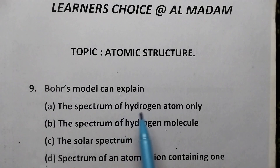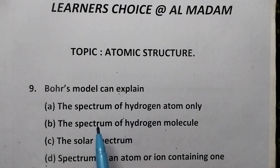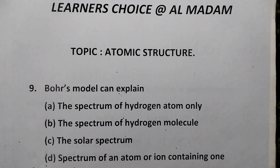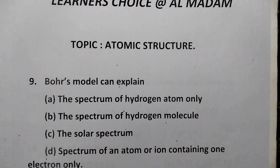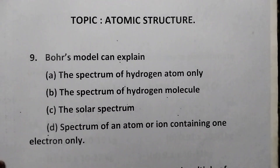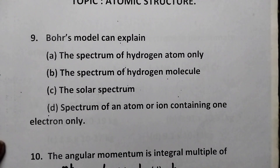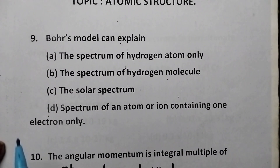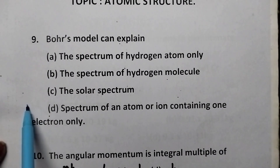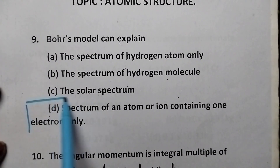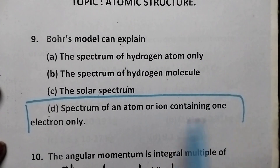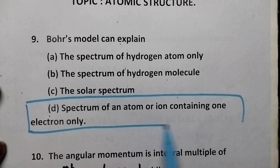Bohr's model can explain — Bohr's atomic model explains the spectrum of an atom or ion containing only one electron. So option D is the right answer.